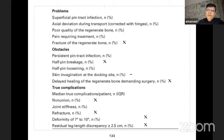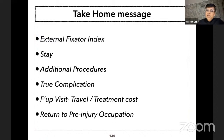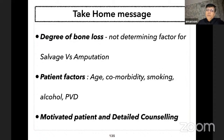Take-home messages: Trifocal osteosynthesis significantly reduces external fixator index. Additional procedures are not increased with the extra corticotomy. Complications do not increase as usually perceived. Follow-up visits, travel, and treatment cost are significantly reduced. Most patients return to pre-injury occupation. The degree of bone loss is not the determining factor for salvage versus amputation; patient factors—age, comorbidities, smoking, alcohol, peripheral vascular disease—should decide whether to opt for amputation or limb salvage.